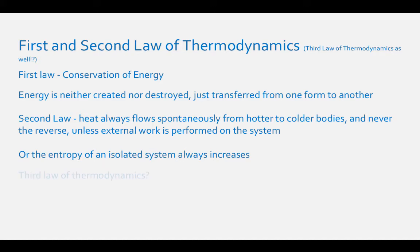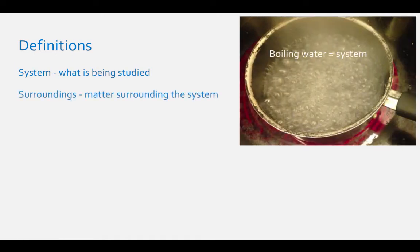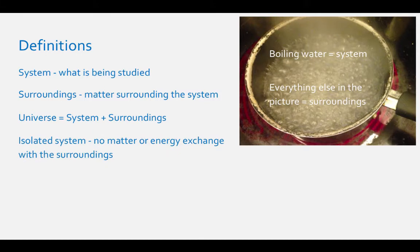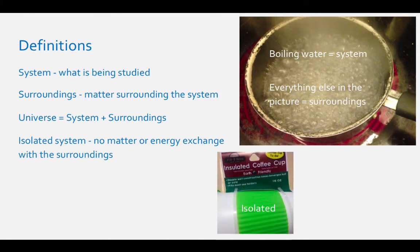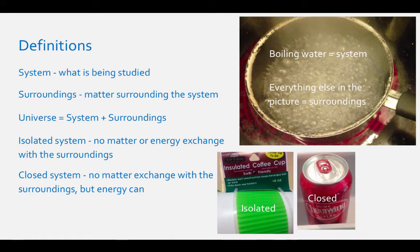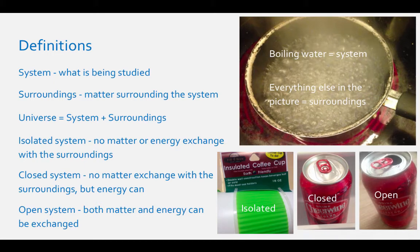There is a third law of thermodynamics as well, but we will talk about that one later. The system is what is being studied — if you are boiling water, the system is just the water, and the surroundings are everything else around the system. We define the universe as the system plus the surroundings. An isolated system cannot exchange heat or matter with the surroundings; essentially, a thermos is an isolated system. A closed system cannot exchange matter, but it can exchange energy with its surroundings — a closed soda can is an example. An open system can exchange matter and energy with its surroundings; an open soda can is an example of an open system.